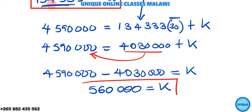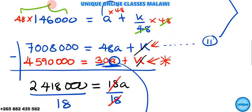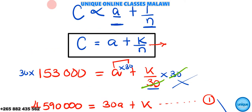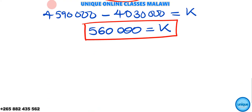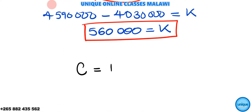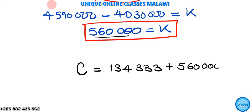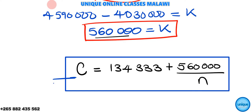Now that we have our values, we can write the general equation connecting C, A, k, and N. The equation is: C = 134,333 + 560,000 / N. This equation can be used to find the feeding cost for any number of orphans.